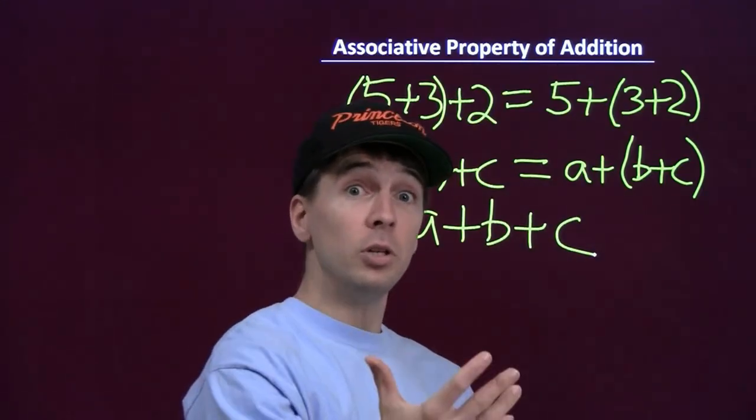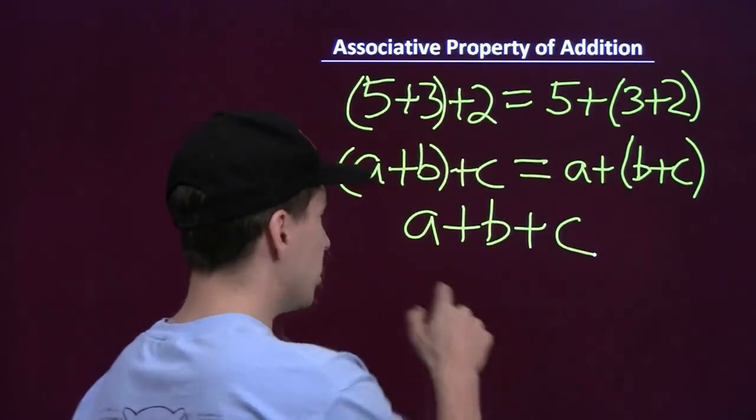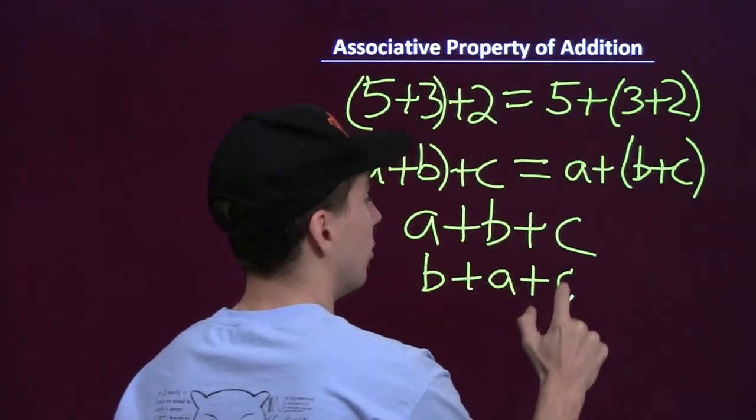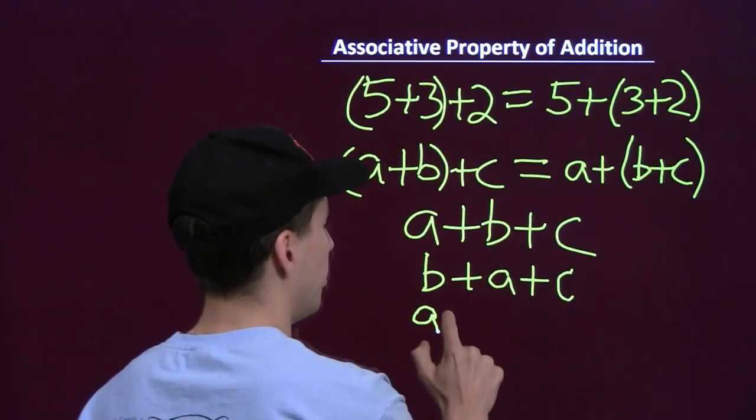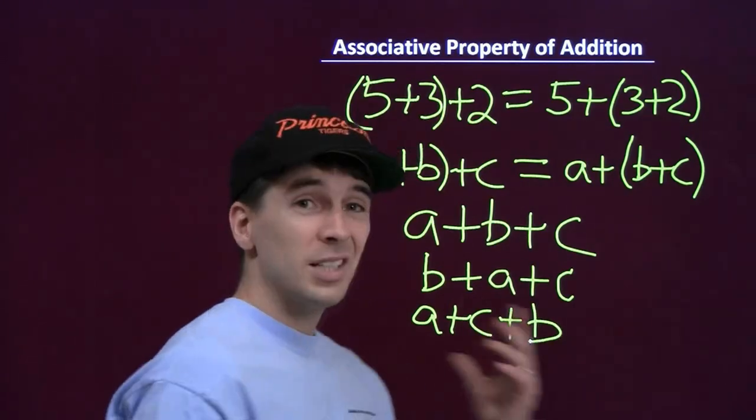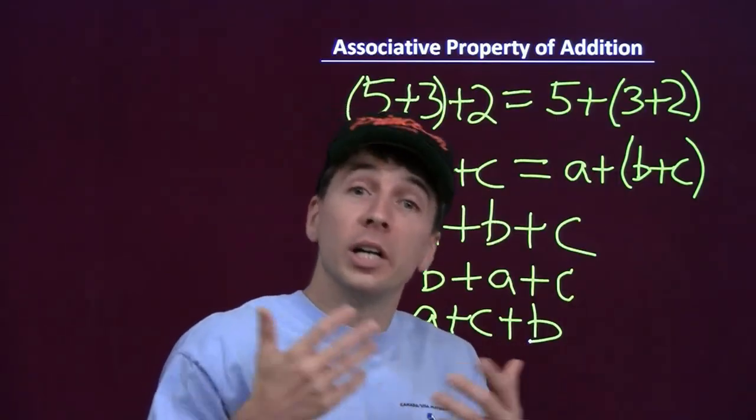And then when we combine that with the commutative property, which tells us we can flip the order of any two of these, we can write A plus B plus C as B plus A plus C, or I could have flipped these two and written it as A plus C plus B. This tells us that it doesn't matter what order we add the three numbers in. We're going to get the same sum.